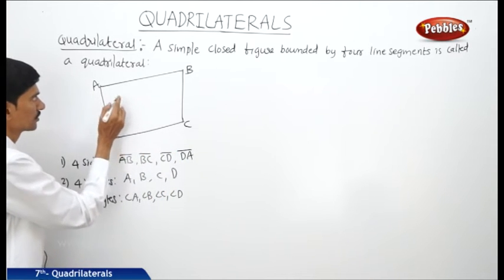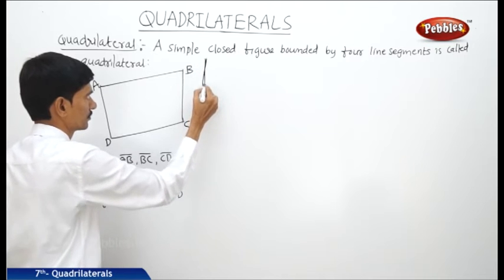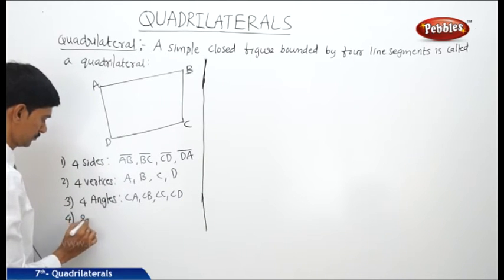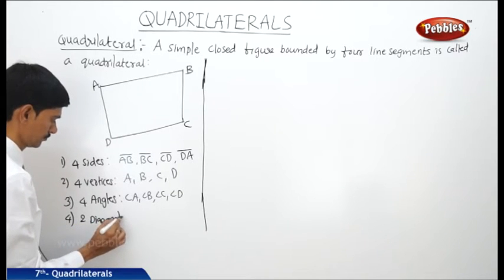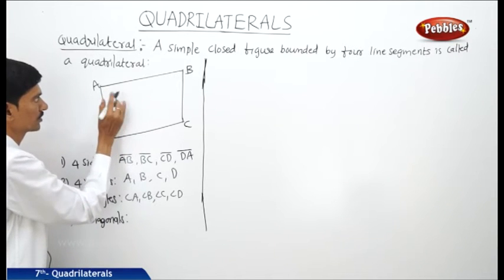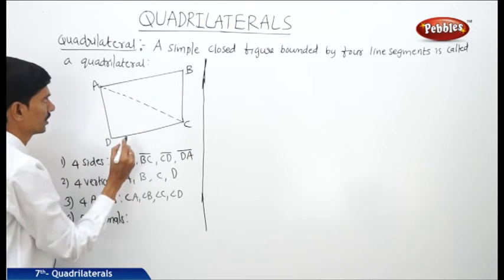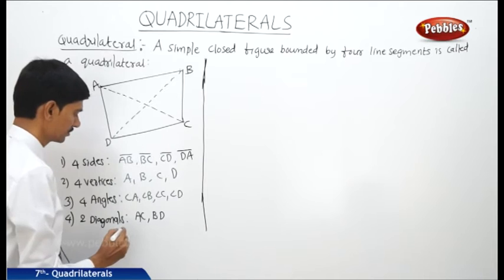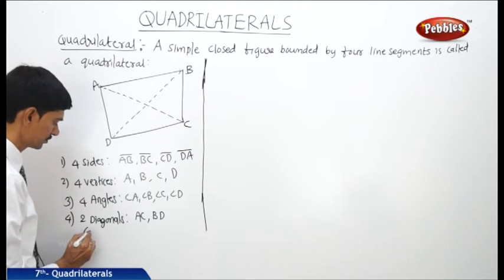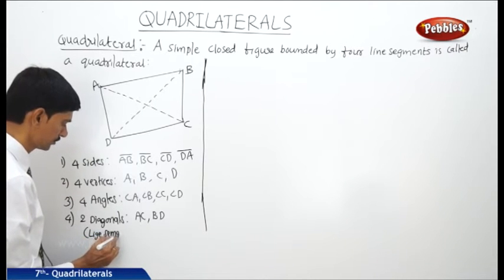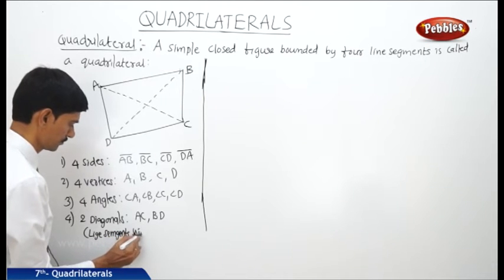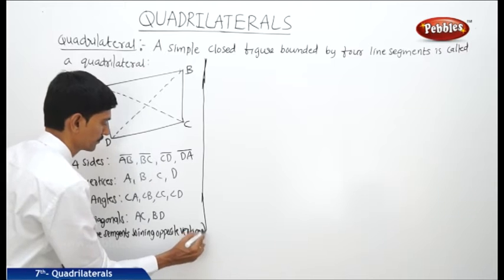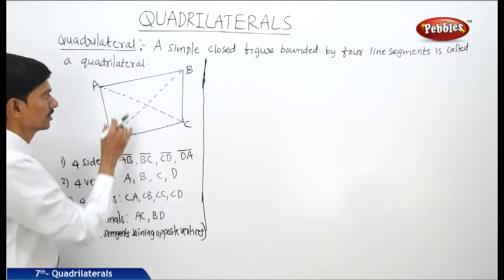These are the four vertices and four angles. At each vertex an angle is formed, so the four angles are angle A, angle B, angle C, and angle D. Now the two diagonals — diagonals means the line segment joining the opposite vertices, and these are called the diagonals of the quadrilateral.